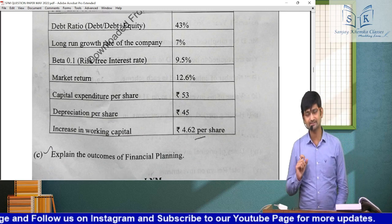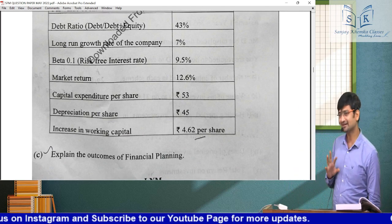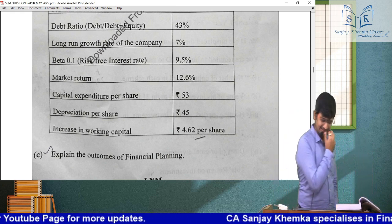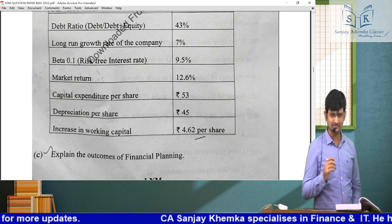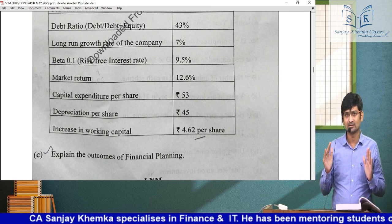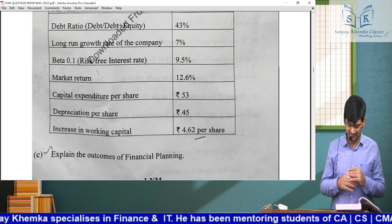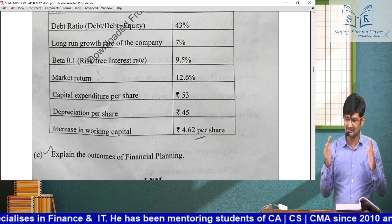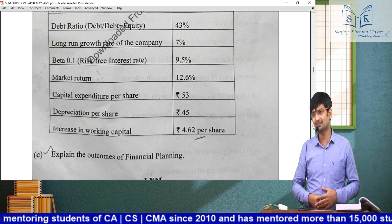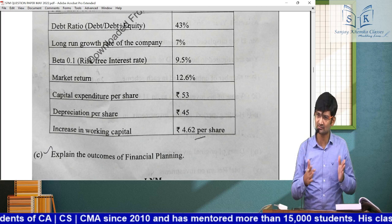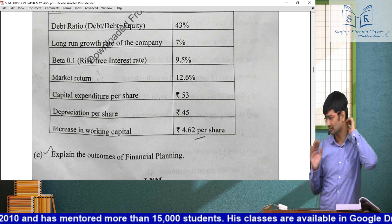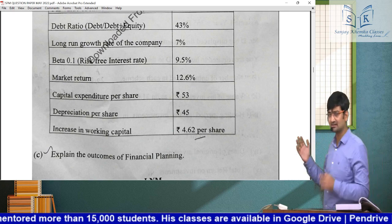Question 2C: explain the outcomes of financial planning. This was from Chapter 1 — Financial Policy and Corporate Strategy in ICAI MAT. There is one paragraph covering Financial Outcomes: if you do financial planning, you can set objectives, take financial decisions, and do financial evaluations. The answers they were looking for were: financial objectives, financial decision making, and financial measures for evaluation.